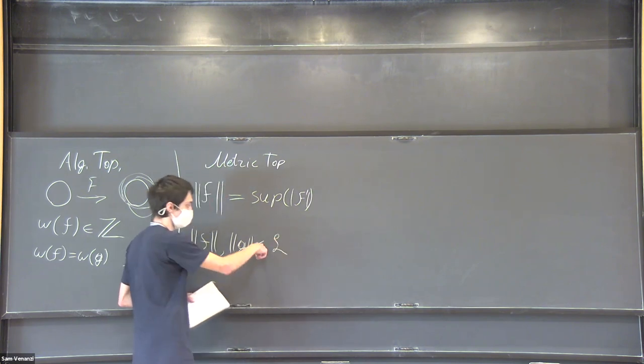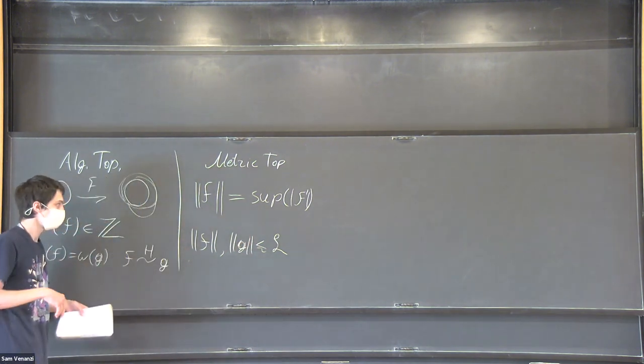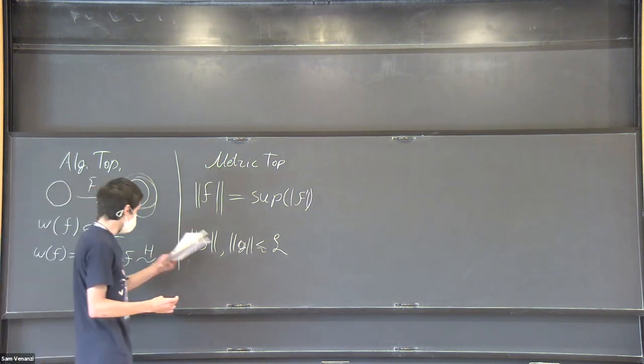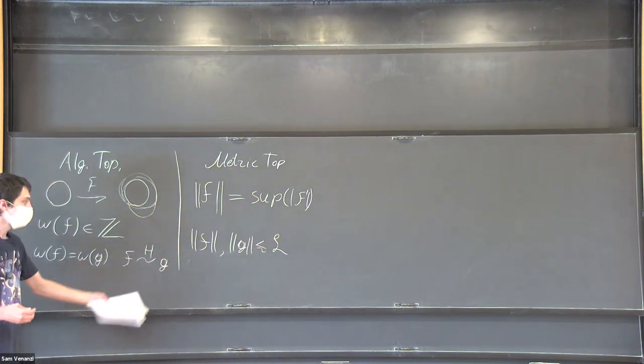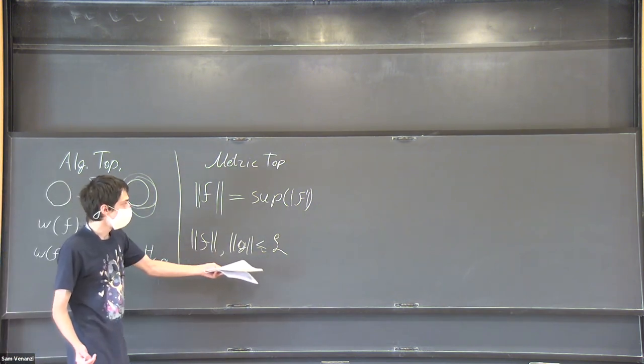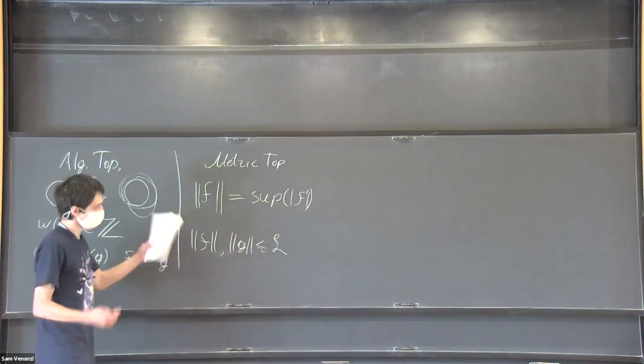I will always put the tilde in all the inequalities because everything is up to constant that I don't care about. We know there is a homotopy between f and g, but the question is: could it happen that both f and g are kind of simple, that they have small Lipschitz constant?